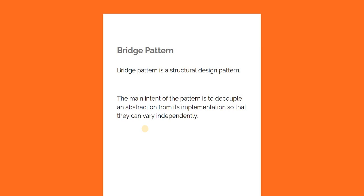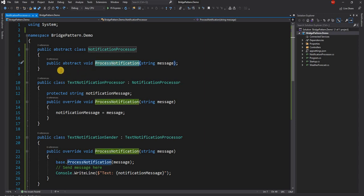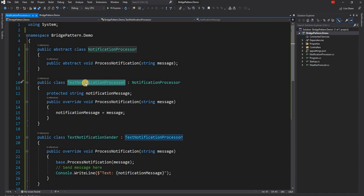Now it's a little bit hard to understand exactly what this means, so I'm going to start with an example which does not implement bridge pattern and then I'll go ahead and implement the bridge pattern for this example. For the example I have taken a notification system. Let's consider we have a notification processor which is an abstract class and it has a process notification method. This is the abstraction. And then we have a text notification processor which implements the notification processor.